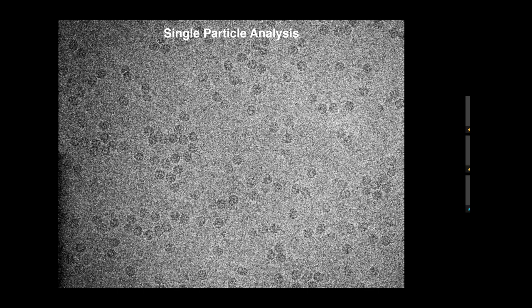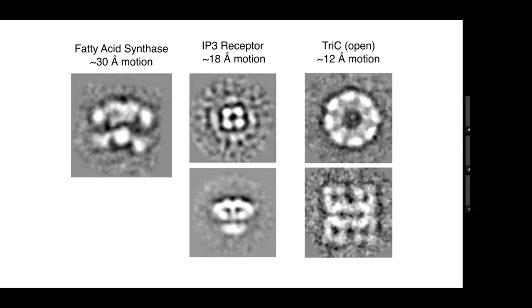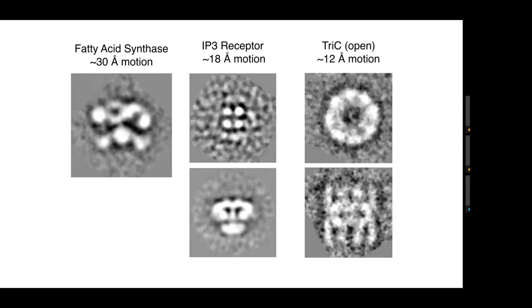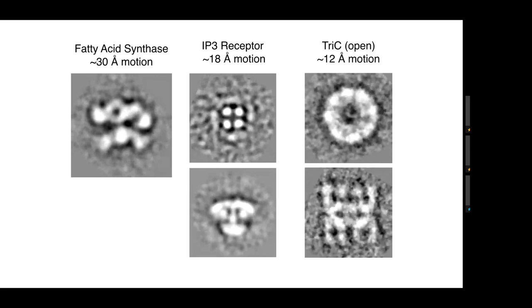I'm going to assume that probably most of the people listening to this are at least basically familiar with cryo-EM and single particle analysis. Single particle analysis — we take these fields of view of isolated single particles embedded in vitreous ice. We then locate the particles. We can then do 2D analysis to generate 2D class averages, which gives us some idea of the variability present in the population of particles and shows us what some of the different views of the particles look like.